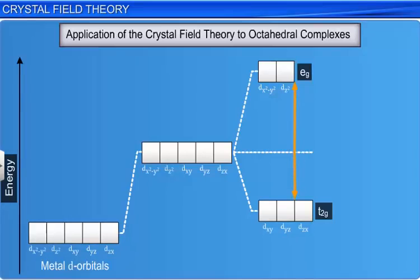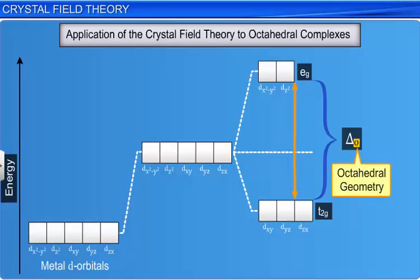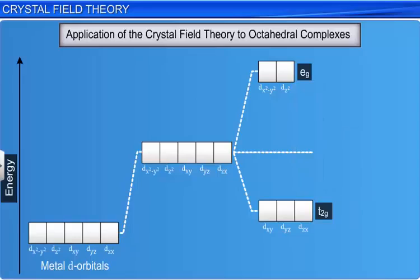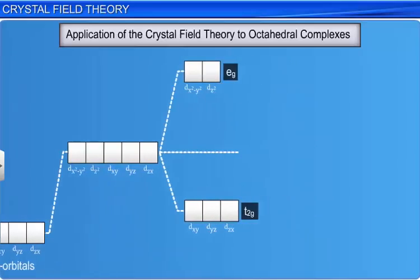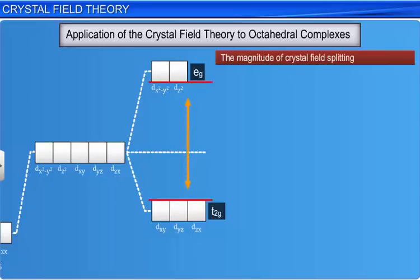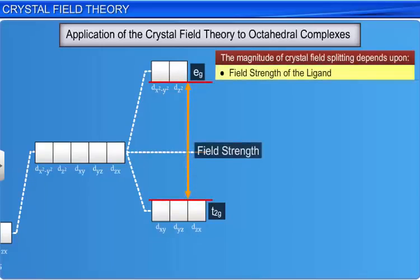The extent of the splitting in energies is represented by the symbol delta-O. The subscript O indicates octahedral geometry. Due to this splitting, the energy of the two eg orbitals will increase by three-fifths of delta-O, while that of the three t2g orbitals will decrease by two-fifths of delta-O. The magnitude of crystal field splitting depends upon the field strength of the ligand and the charge on the metal ion.